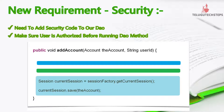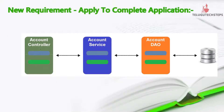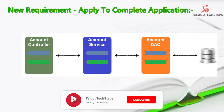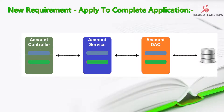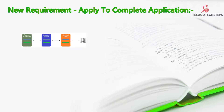Then the client came back and said: let's add it to all of our layers. Now we need to apply login and security to every layer — controller, service, and DAO. This means we are essentially doing a copy-paste of the logging and security code across all layers. The client then said: do it for the complete application — logging, security, profiling, and transaction management — for the entire application.